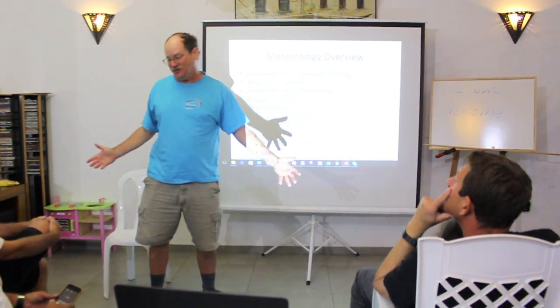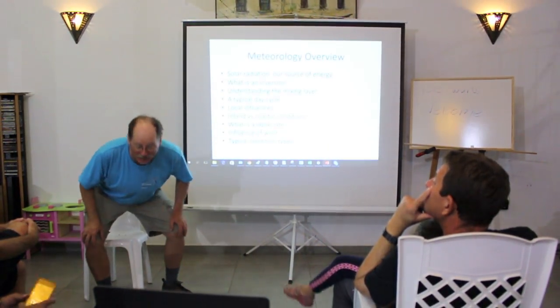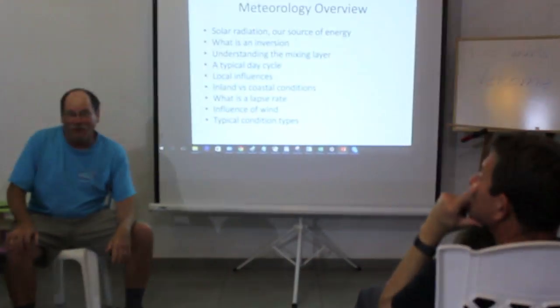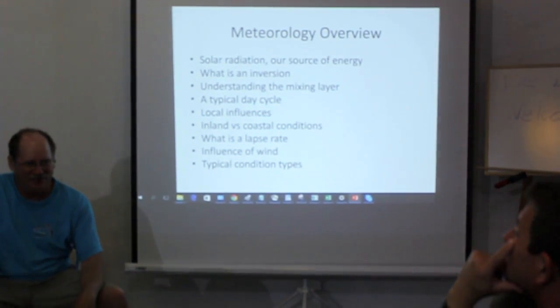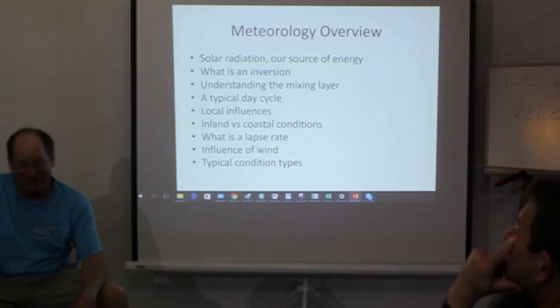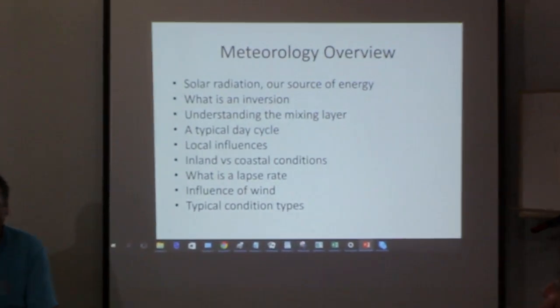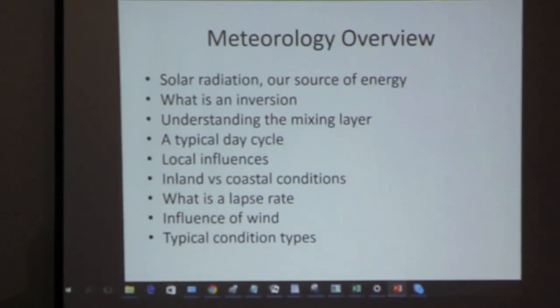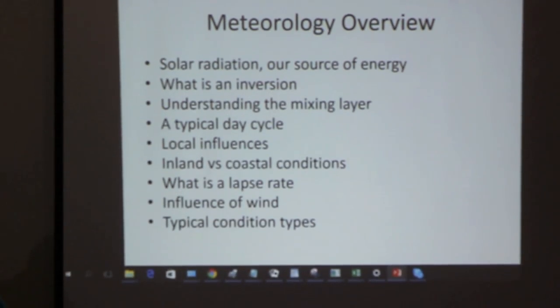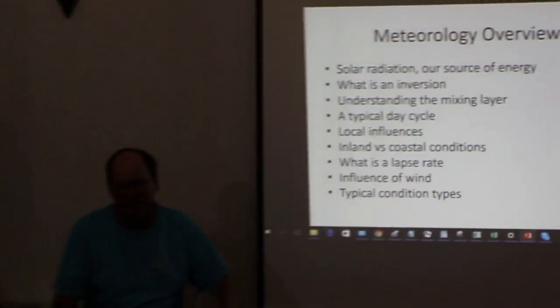So the first big section is meteorology - what's going on in the atmosphere. The obvious thing: what's powering us? For us guys that are flying pure sailplanes, the only thing that's powering us is the sun. I'll be going through our office. You need to understand what's limiting our universe, which is typically a temperature inversion. What's in the room below that is the mixing layer, and the typical cycle during the day, because the rules change during the day. It's always good to understand when the rules are changing so you understand what's going on.